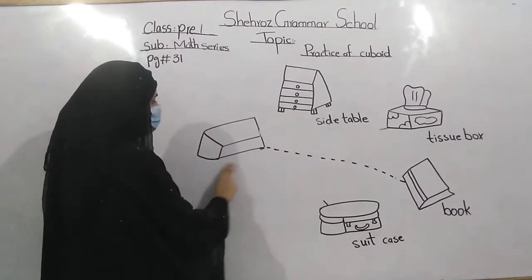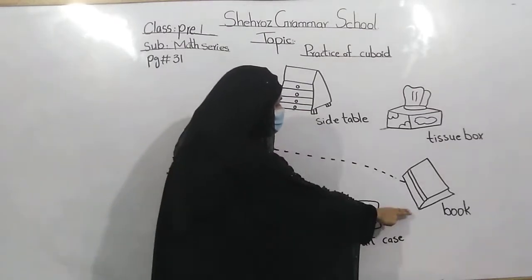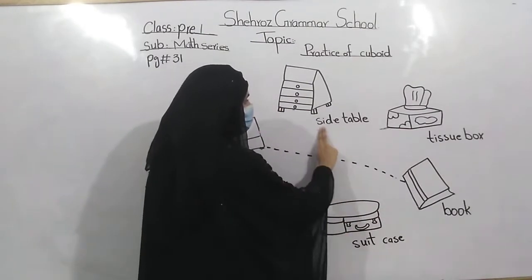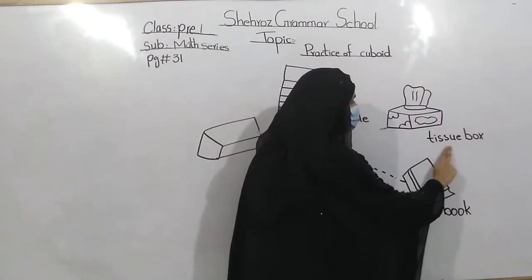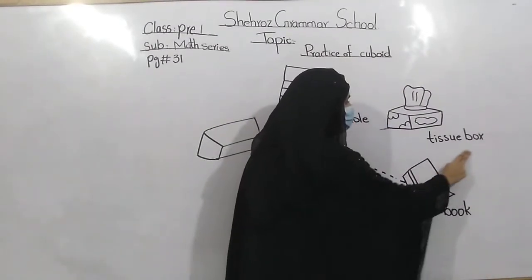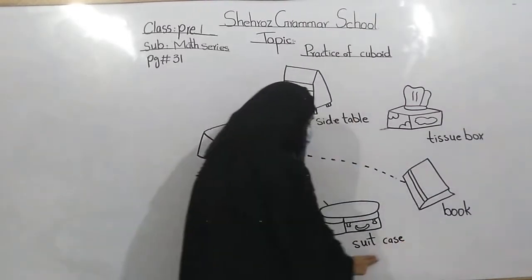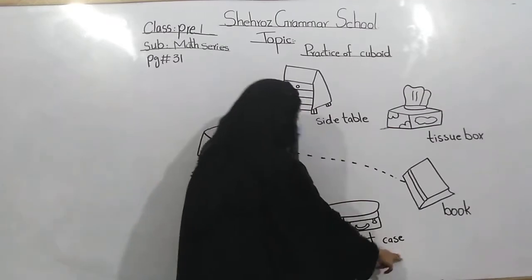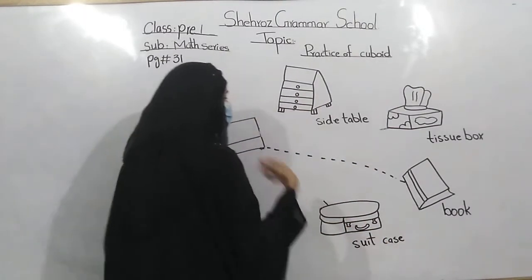This is a cuboid. And these are cuboid shapes: side table, tissue box, book, and suitcase. These are all cuboid shapes.